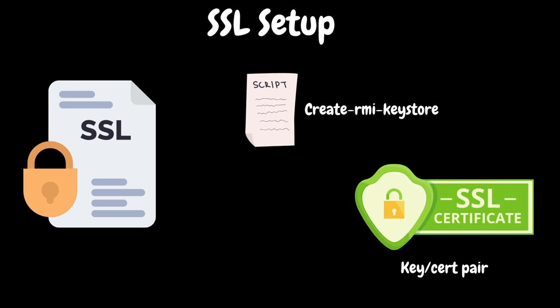JMeter comes with a script called create-rmi-keystore to generate a keystore that contains one key and its corresponding certificate. We can use this one key and certificate pair for all worker nodes and control nodes to transport communications more securely. To set up the SSL key, we execute the create-rmi-keystore script available in the JMeter bin directory and answer the questions the program asks. Once we execute the script, it will generate an RMI keystore JKS file. By default, the validity of this key certificate pair will be seven days, but we have an option to extend this duration.